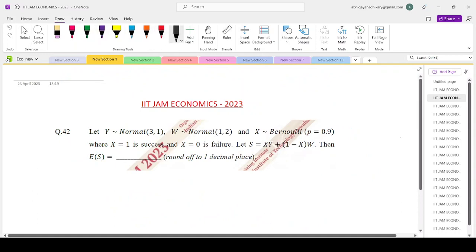Now let us have a look at question number 42 of the IIT JAM 2023 question paper. Y follows normal distribution (3,1), W follows normal distribution (1,2), and X follows Bernoulli distribution with p=0.9. We define S as XY + (1-X)W. Then what is the expectation of S?